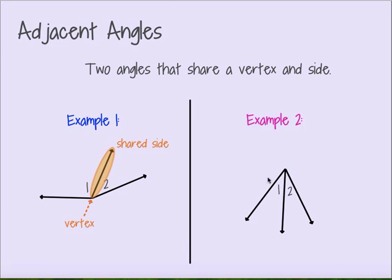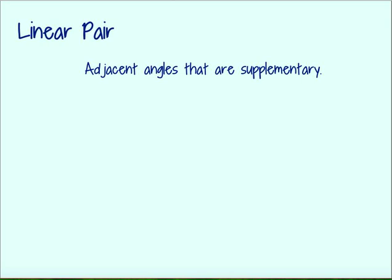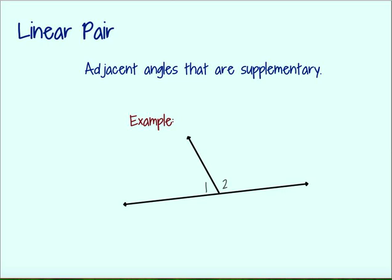Here's another example of adjacent angles. Basically, they just have to be side by side and share a vertex. A linear pair actually combines adjacent with supplementary. I have two angles that have a vertex and a side in common — in other words, they're side by side — that form a 180 degree angle. Anytime you see two angles that form a straight line or straight angle, they're guaranteed to be a linear pair.